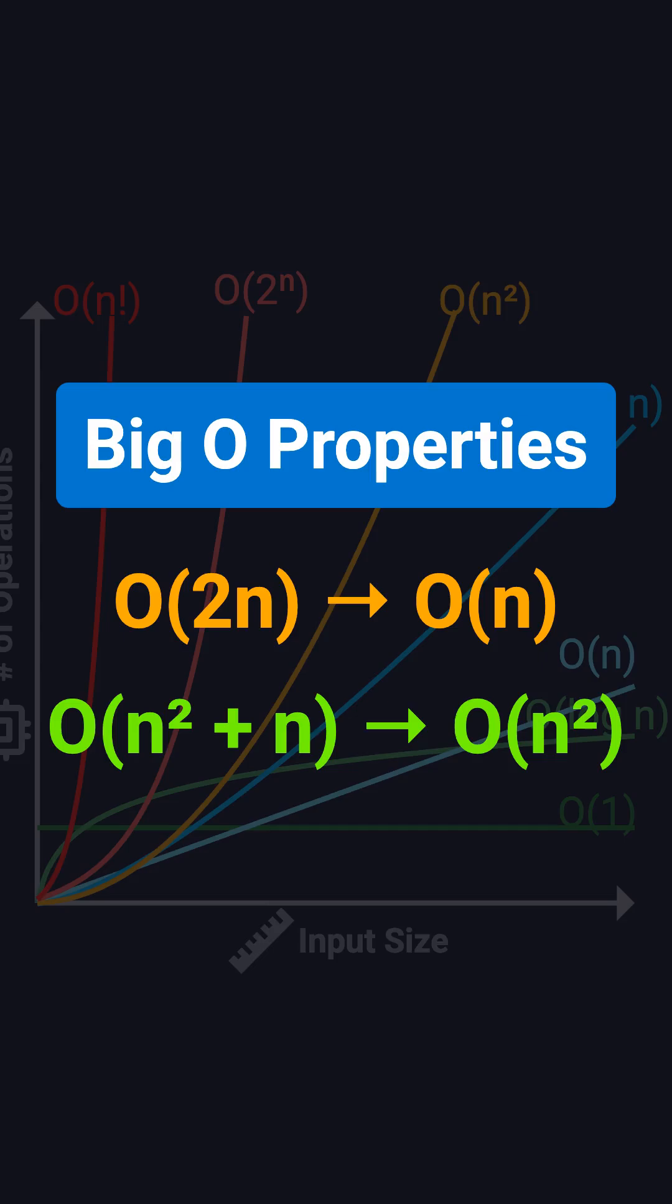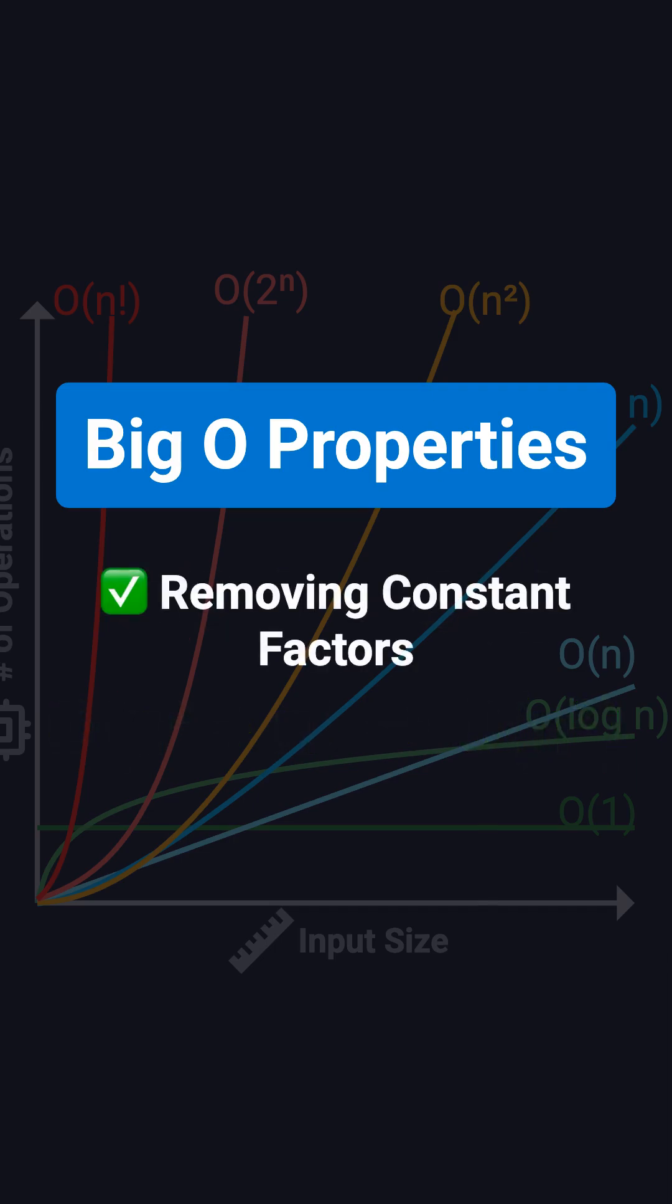Hi everyone! Welcome back to the Big O series. In the last video, we learned what Big O is. Today, we're going to talk about two key properties of Big O: removing constant factors and dropping non-dominant terms.